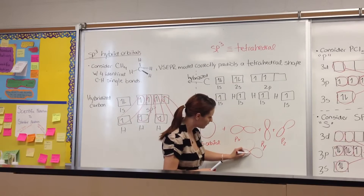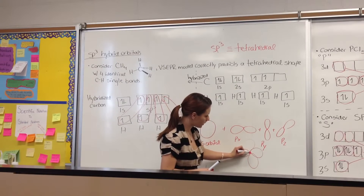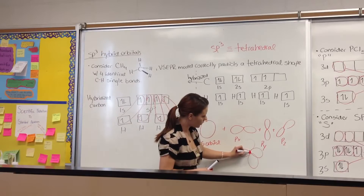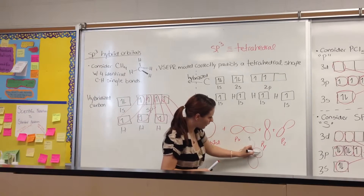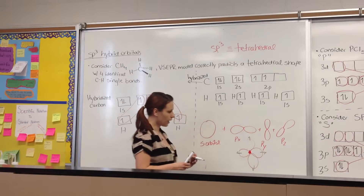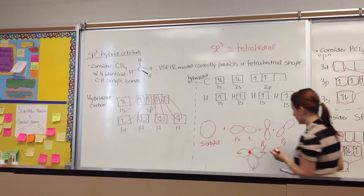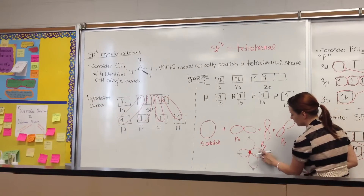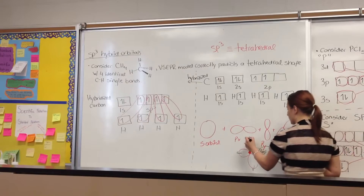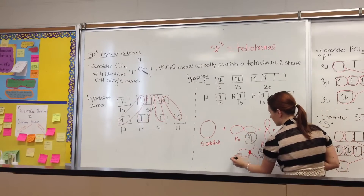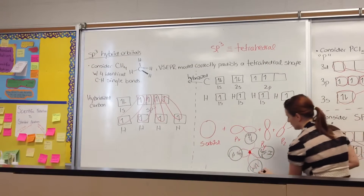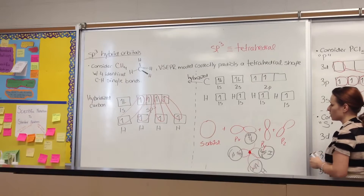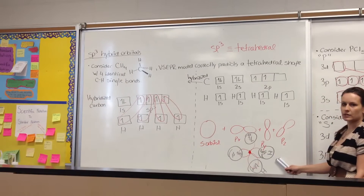When they combine, they form this tetrahedral shape, with a node in the middle representing the carbon nucleus. Each one of these orbitals has one unpaired electron, and now the hydrogens can come in and pair. Hydrogen is drawn as a sphere because hydrogen has only S orbitals. This is how you represent the bonding situation for methane.